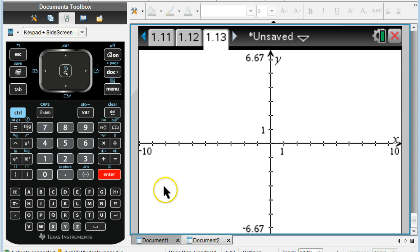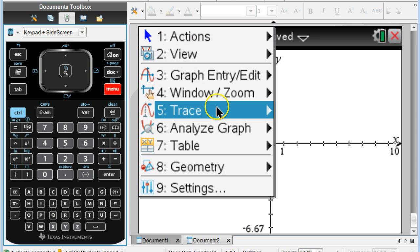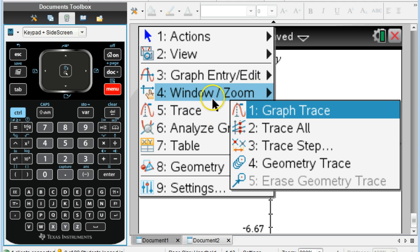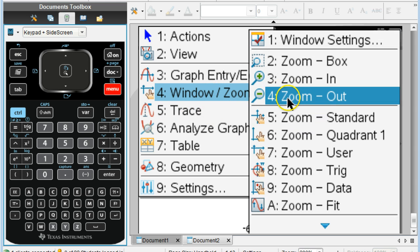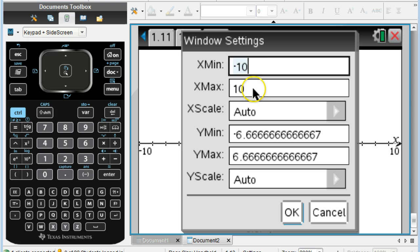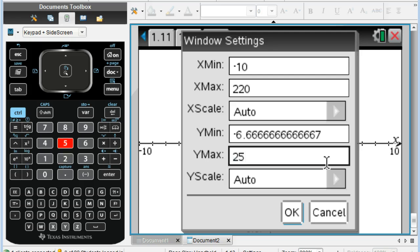If I add in $80 every month, I've got to probably change my window. So my window settings. First of all my X's are going to go to 216, so let's make it 220. And then if I'm doing $80 times 216, that isn't going to be very much money. So I'm going to go to about 25,000 and see how that works.